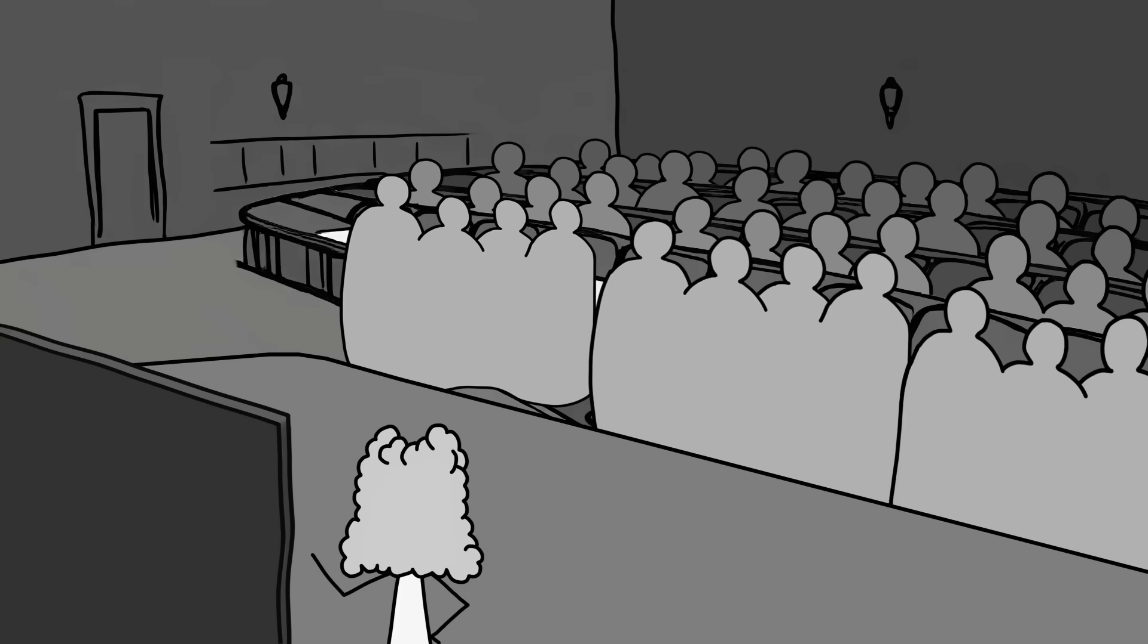But hey, the guillotine was supposed to be the humane alternative to messy executions. Spoiler alert: that backfired. And while we're here, let's tackle an unsettling question. What happens to a head after it's, you know, detached?